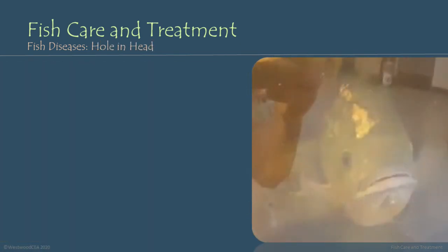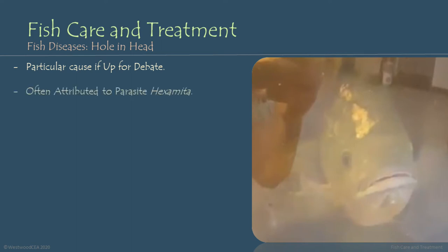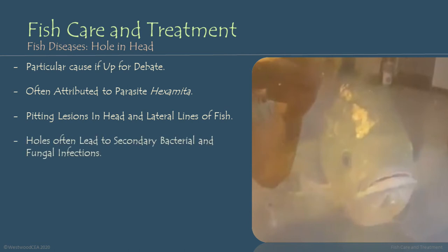One of the less common fish diseases we see in aquaponic systems, but worth discussing, is hole-in-head. The particular cause is actually up for debate, but it's often attributed to the parasite Hexamita. Hole-in-head presents itself as pitting lesions in the head or the lateral lines of the fish — so it can also be bored-out holes or lesions down the lateral line of your fish. One of the big problems with hole-in-head is that the pits or holes often open up wounds that lead to secondary bacterial and fungal infections, which can be harmful to the fish and lead to mortality.